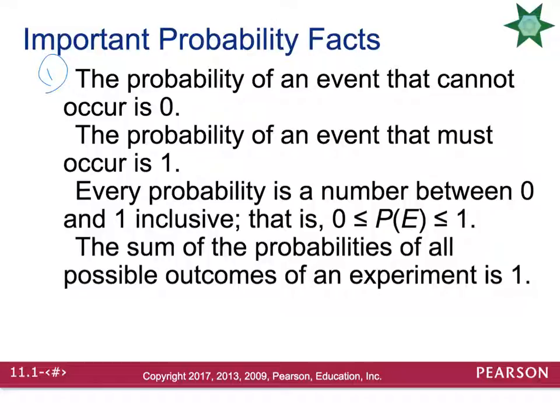The probability of an event that must occur is going to be one. So if you're looking at the last example, rolling a number less than seven on a die, that's going to happen every time you roll the die. So that probability would be one.